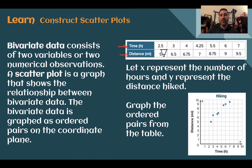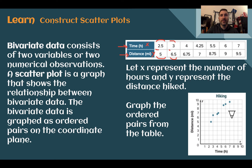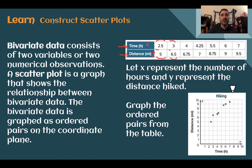Let's let x represent the number of hours, so our time is in hours, and y is our distance. Each of these is an ordered pair — we have our coordinate 2.5 comma 5. To make a scatter plot, we take each of these data points and plot them on our graph. So at 2.5 hours we had a distance of 6.5, at 3 hours a distance of 6.5, at 4 hours 6.75, and so on. These dots are the data from the table shown on a graph — that is what a scatter plot is. In future examples we can use this scatter plot to figure out information about the two variables' relationship with each other.